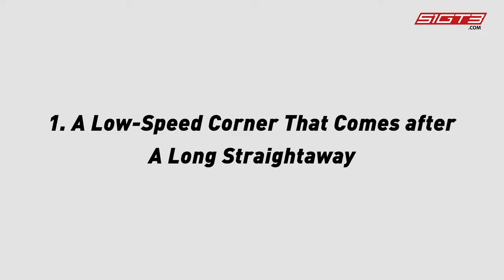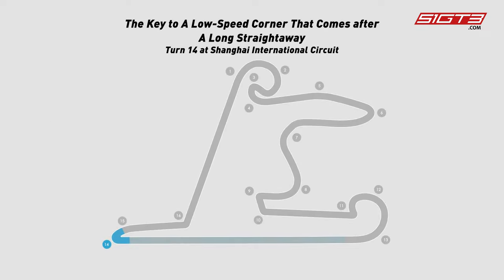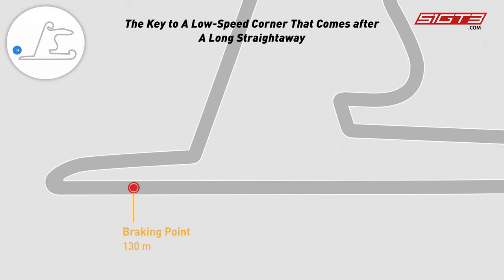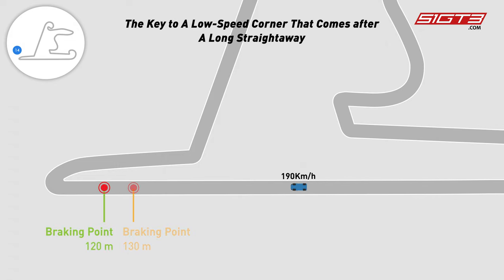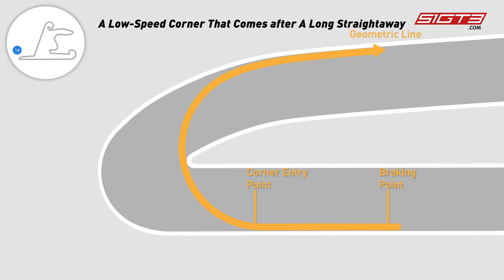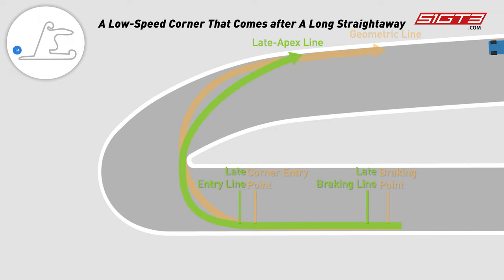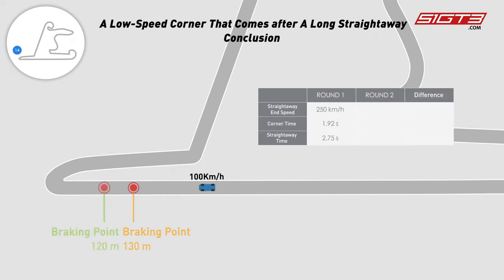The first type is a low-speed corner that comes after a long straightaway. Take Turn 14 at Shanghai International Circuit as an example. After applying full throttle on the long straightaway, the car is ready to brake into the corner at a very high speed. The key to improving lap time is to maintain a high speed through the end of the straightaway and start braking as late as possible. In other words, the braking and entry point should come in late, and the cornering line should look like a late apex line instead of a geometric line. Although having a late braking point can cause a certain amount of time loss, there's no need to worry because more time was earned in the braking zone even before we entered the corner.